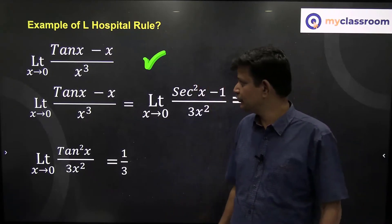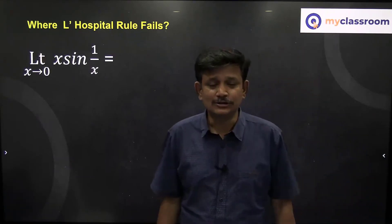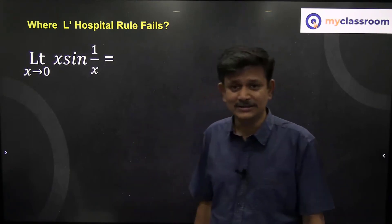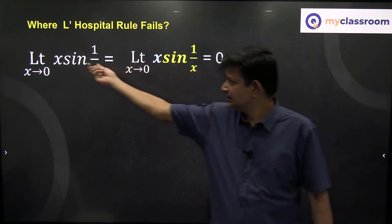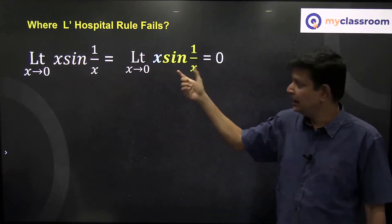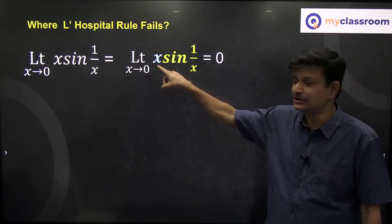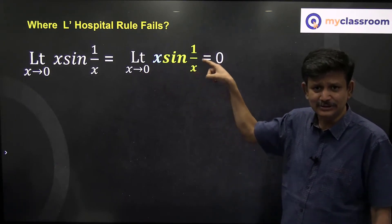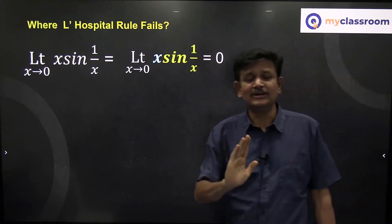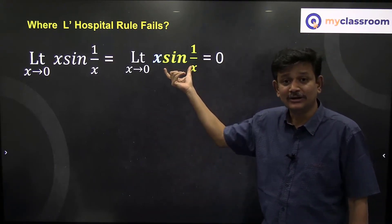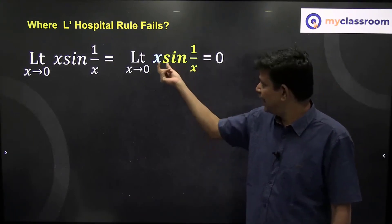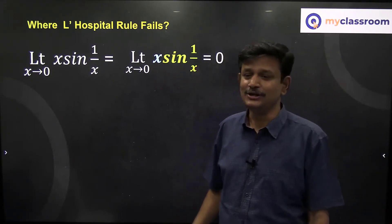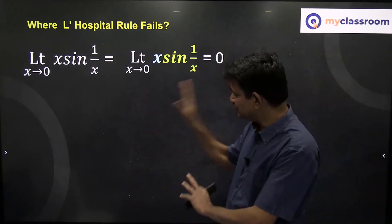Now let us see where L'Hôpital's rule fails. Consider the limit as x→0 of x·sin(1/x). Before applying L'Hôpital's rule, let me evaluate this directly. x·sin(1/x) has two parts: x, which approaches 0, and sin(1/x), which — since 1/x becomes an infinitely large number — will always lie between −1 and 1 (it is bounded). A number approaching 0 multiplied by a bounded number gives 0. So this limit exists and equals 0.